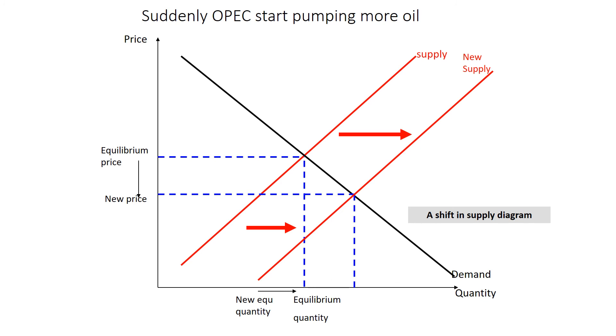In our second example, OPEC starts pumping more oil. We see the shift in the supply curve to the right, causing a movement along the demand curve. We now see the new price being lower and the equilibrium quantity being higher.